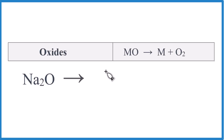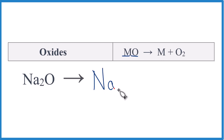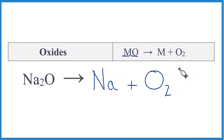With metal oxides we have a metal and then we have oxygen. Like sodium — that's our metal — and then we have oxygen, so that's a metal oxide: sodium oxide. When this decomposes, we'll get the metal, just the sodium, and then we'll get oxygen gas, O₂. That's the decomposition of sodium oxide.